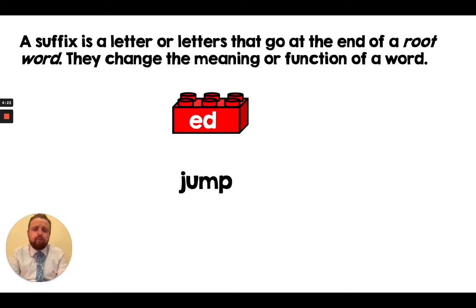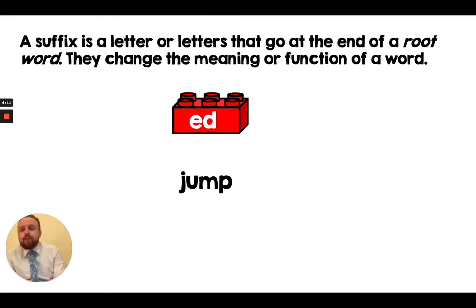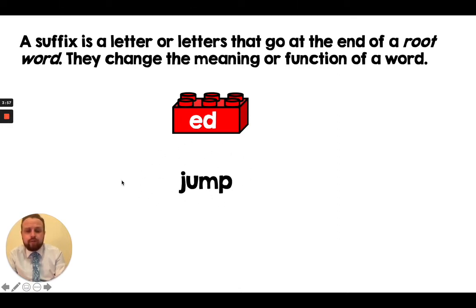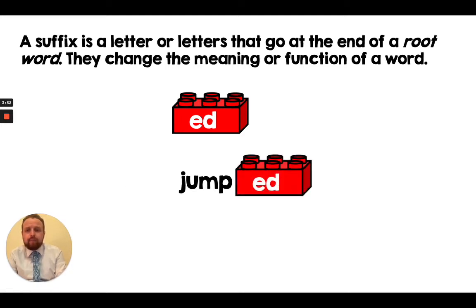As an example, here's a suffix we've learned before — the suffix E-D. Can you remember what the suffix E-D does to words? We use it on verbs and it puts verbs into the past tense. Beneath the suffix E-D I've got a root word: 'jump.' If I add the suffix E-D to it, it becomes 'jumped,' and the meaning changes — it's now in the past tense, meaning it's something that has already happened.